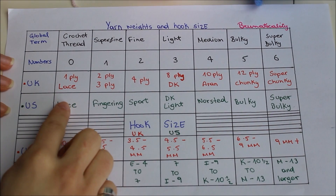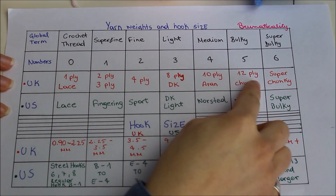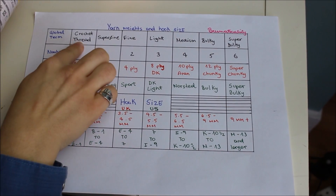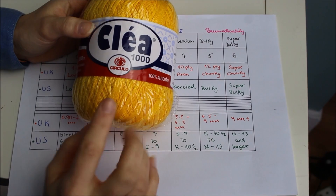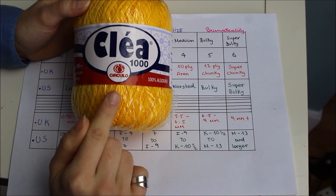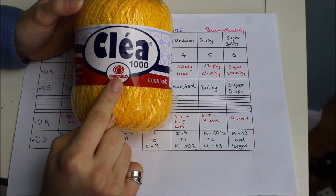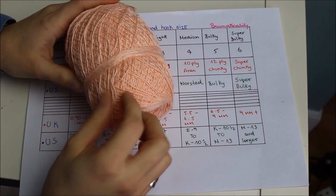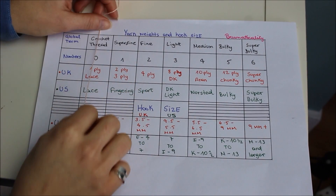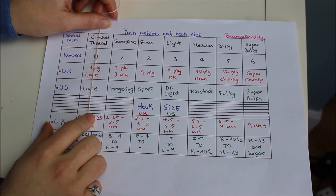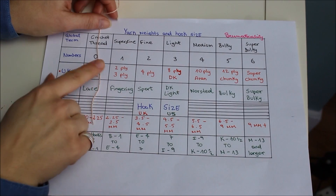Now I'm just going to be showing you guys examples of each of the yarn weights. The first one is number 0 — the crochet thread. I have an example here which is this one from Cleia, a crochet yarn from Brazil. You can buy this yarn on eBay — I'm going to be linking everything in the description below. It's not that expensive either. With this crochet yarn you can create amazing bikini projects, and it looks so nice. I have a tutorial coming up soon on my channel, so keep an eye out for that.